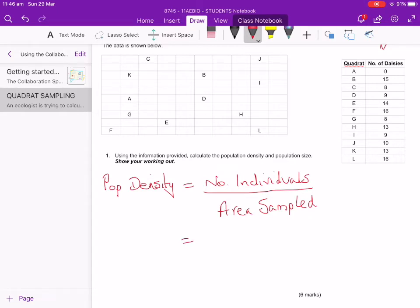So in this case, what you do is go through and add up how many individuals were there in total. In this case, there was 131 of them. How big was the area that was sampled? We've got 12 quadrants and each quadrat was 9 metres squared.